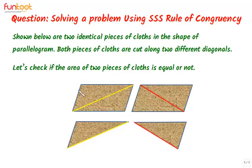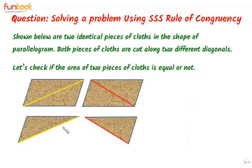We have two identical pieces of cloth in the shape of a parallelogram, and these are cut along different diagonals. This one is cut along the yellow diagonal and this one is cut along the red diagonal. We have to check whether the area of these two pieces is equal or not. One important point to keep in mind is that although these two parallelograms are identical and hence congruent, these two parts need not be congruent, because they are cut along different diagonals and diagonals need not be equal. So these two parts need not be congruent.